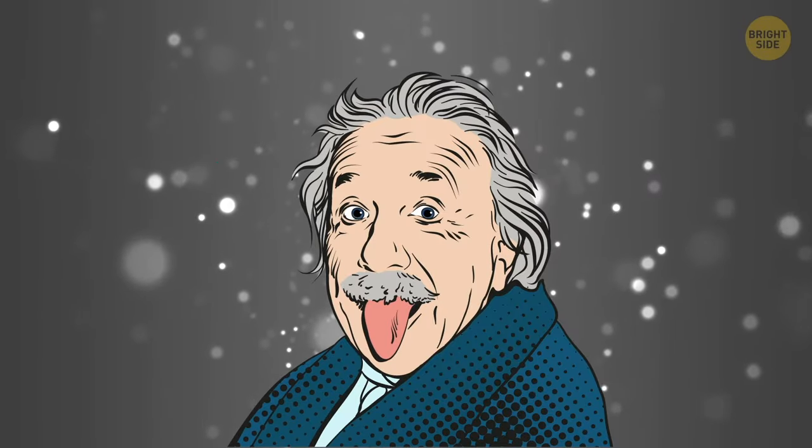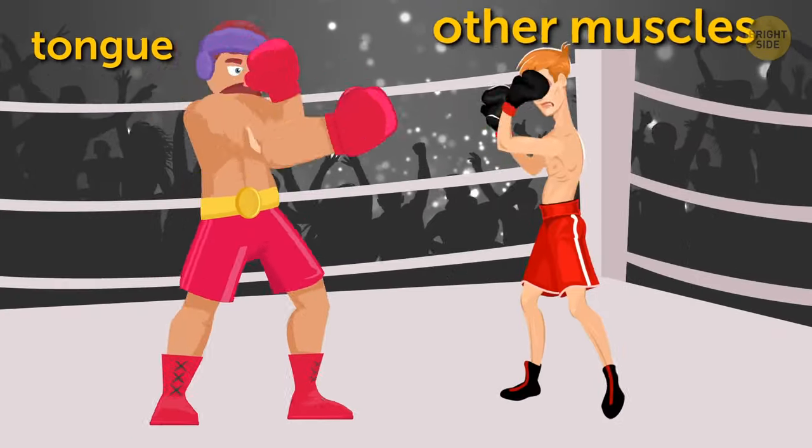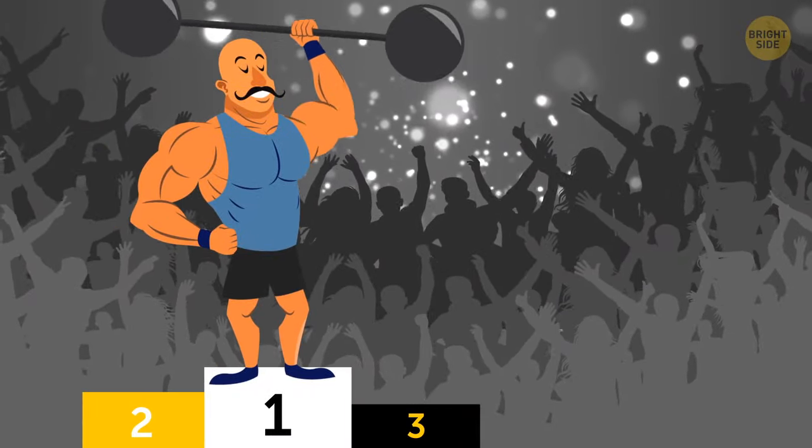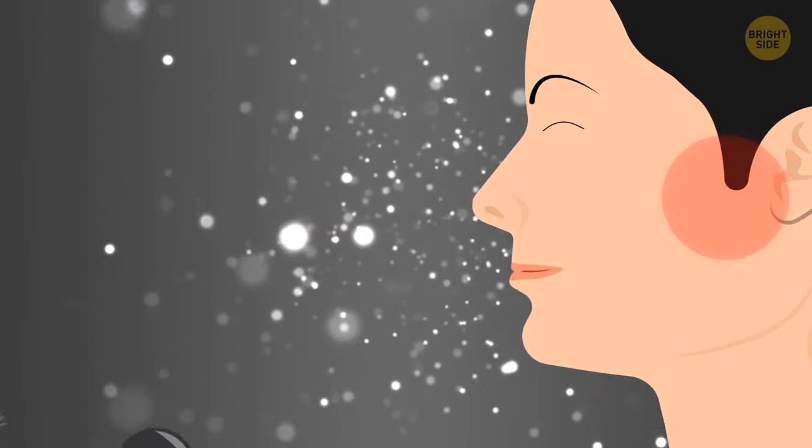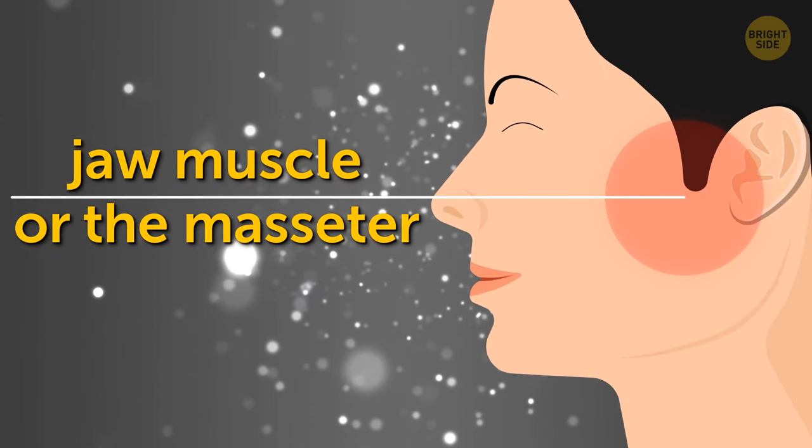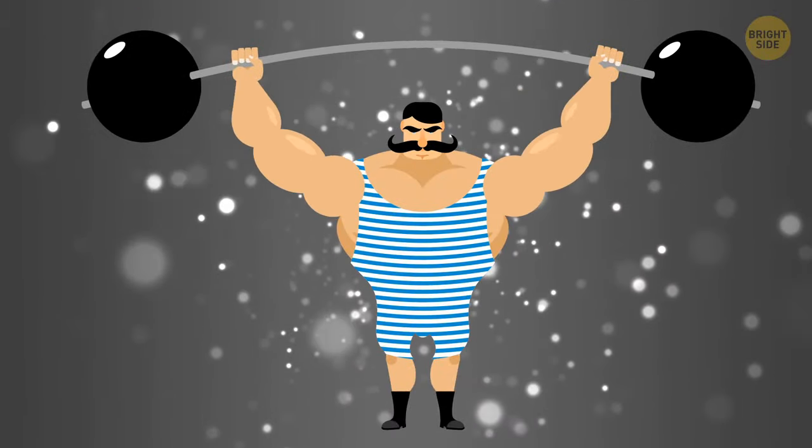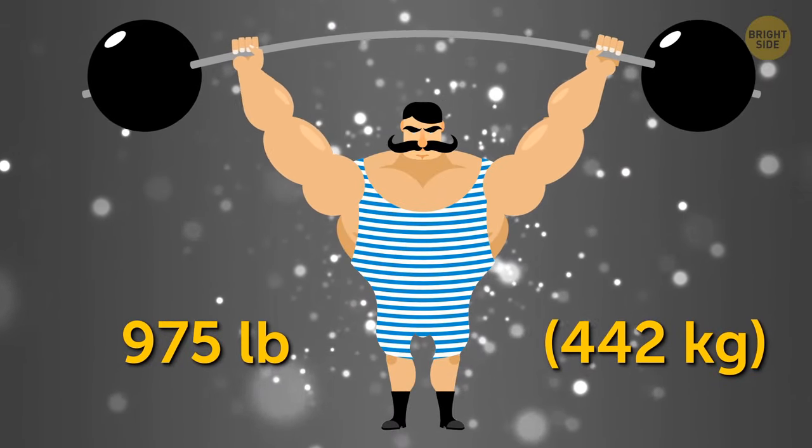It was believed for a while that the tongue will beat pound for pound every other muscle in the human body. But here is another muscle you train regularly, and it's the real champ: your jaw muscle or masseter. It provides 200 pounds of pressure, and in the world record case, all 975 pounds.